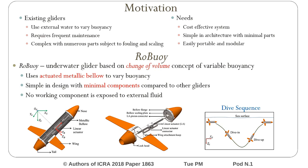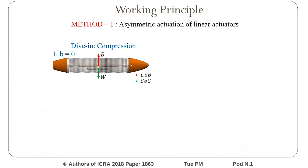Roboy is simple in design with minimal components compared to other gliders. The Roboy prototype uses two similar linear actuators to actuate the metallic bellow. By expanding and compressing the metallic bellow using linear actuators, the buoyancy is varied, and thereby the dive sequence as shown in the figure can be achieved.